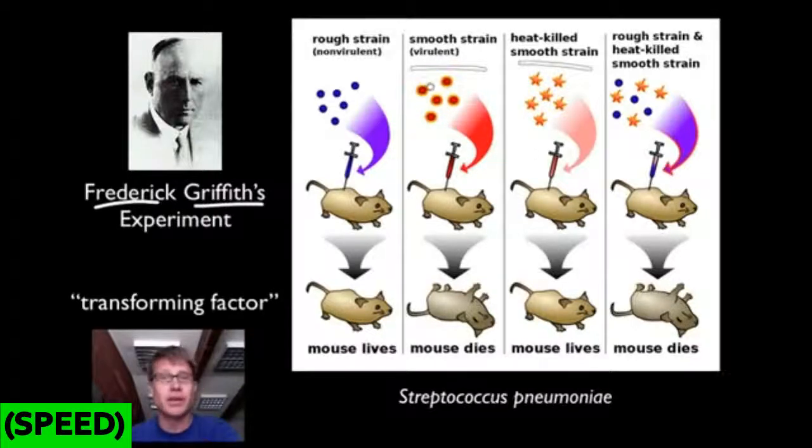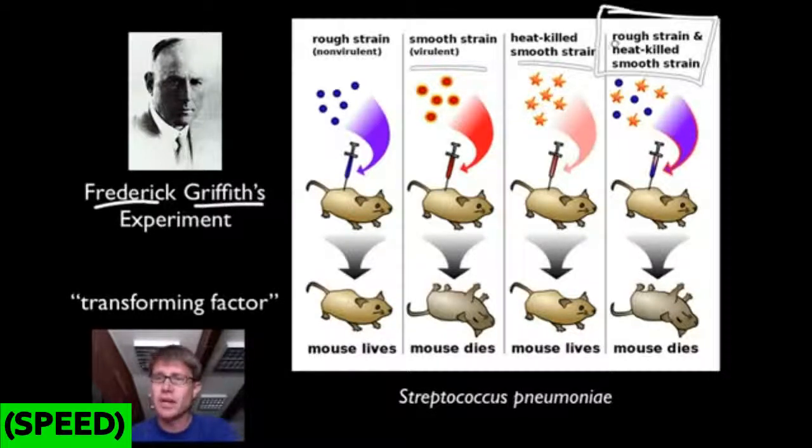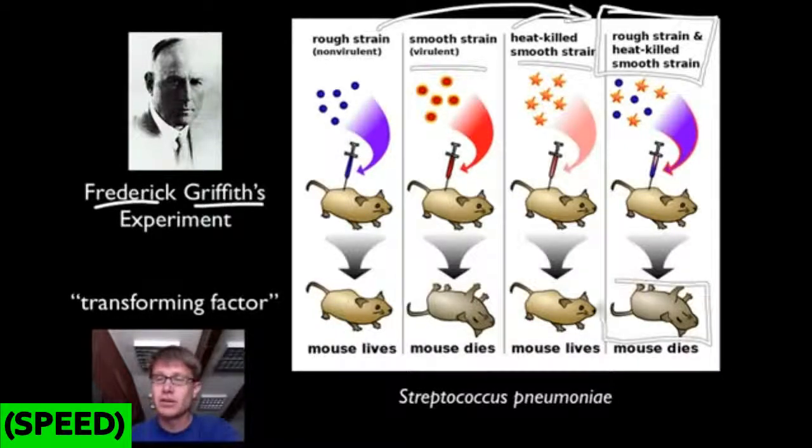He then took this evil smooth strain of Streptococcus. He heat-killed it, so heated it up. And he found when he injected that heated into the mouse, the mouse was good to go. So we haven't learned anything yet. What he then found, and this would be that discrepant event, is that when he took the rough strain, which normally doesn't hurt the mouse at all, he then mixed it with the heat-killed smooth strain, which normally doesn't hurt the mouse at all, the mouse died.